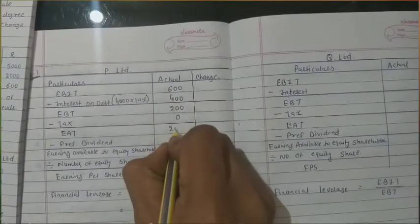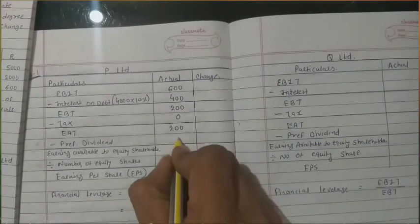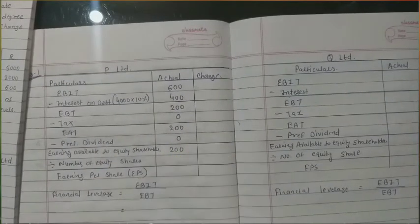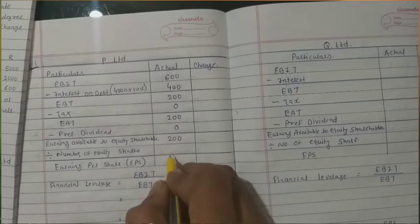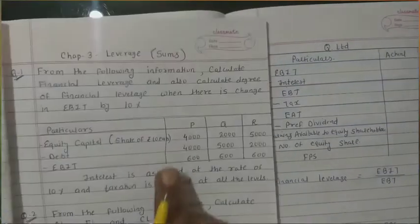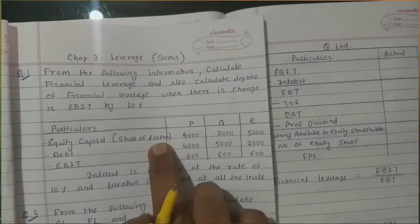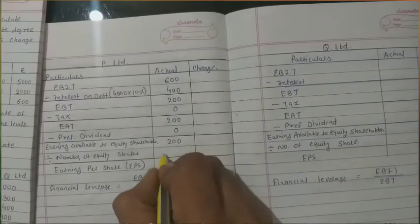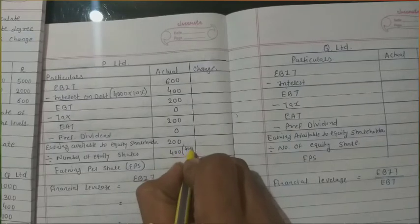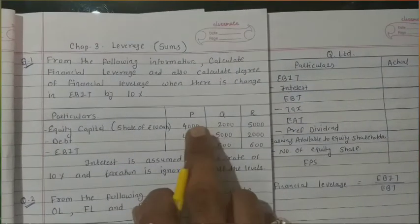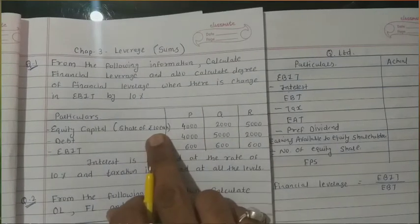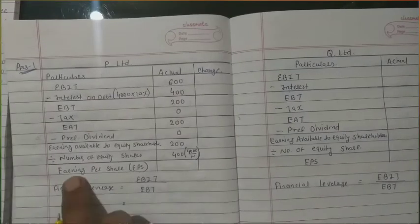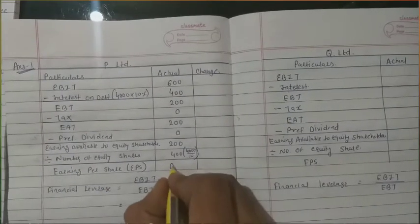Tax rate is 0, so earning after tax = 200. Preference dividend is also not there, so earning available to equity shareholders = 200. Number of equity shares = book value divided by face value = 4000 ÷ 10 = 400 shares. So EPS = 200 ÷ 400 = 0.50.